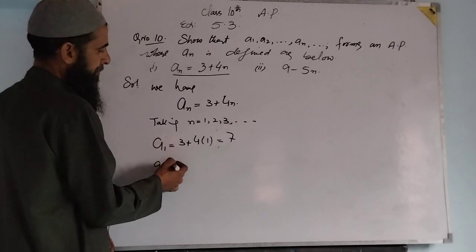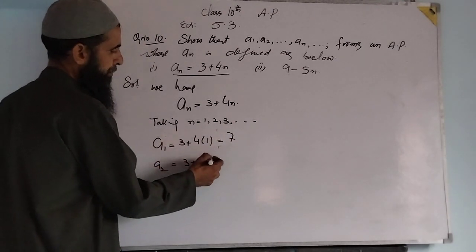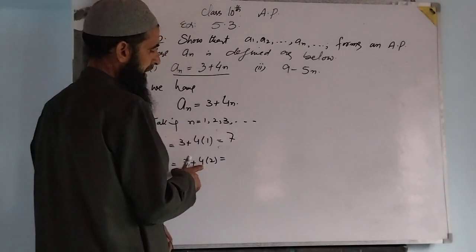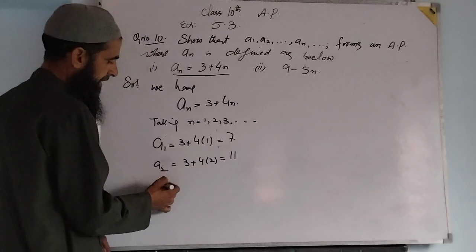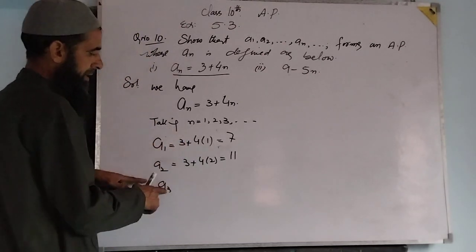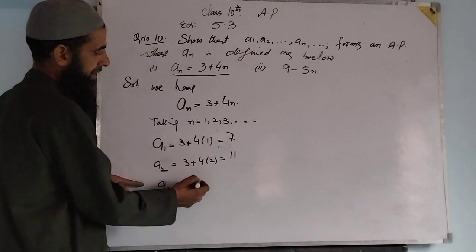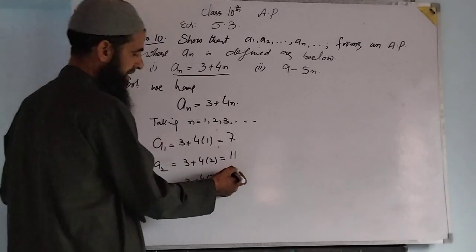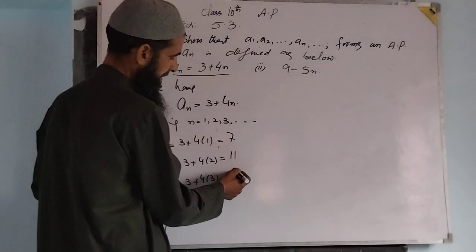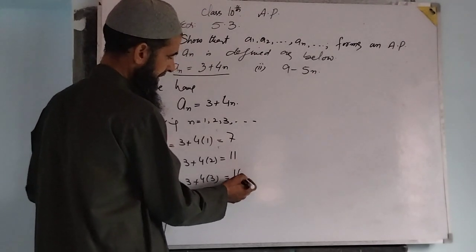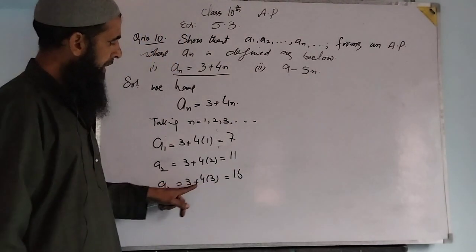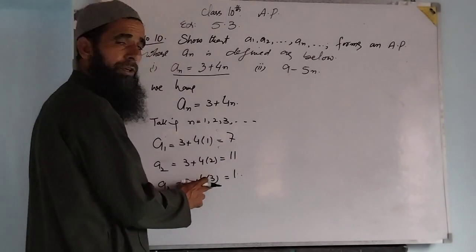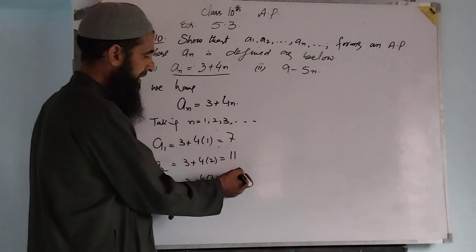A2 is 3 plus 4 into 2, that is equal to 3 plus 8, which is 11. A3, the value when n equals 3, we get 3 plus 4 into 3. 4 into 3 is 12, plus 3, that is 15.